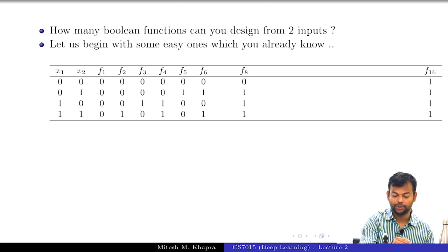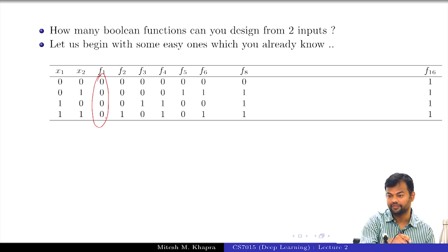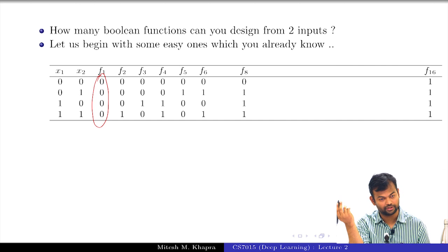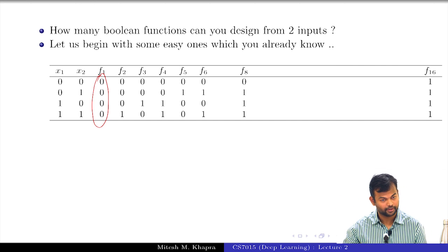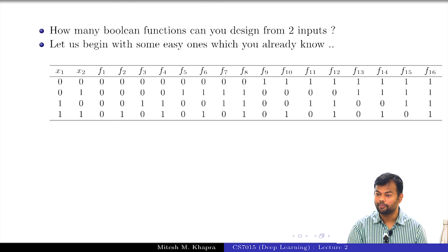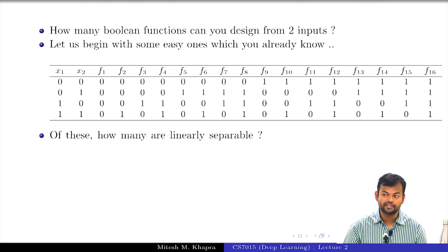So, why did you reach 16 actually? Because with two inputs will have these four values to take care of and each of these are again binary. So, you actually have 2 raise to 2 raise to n right. So, for three inputs 2 raise to 2 raise to 3 would be 256 right.